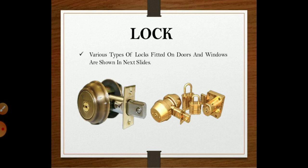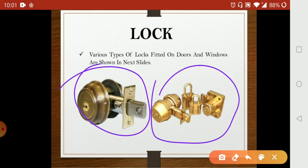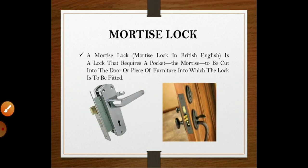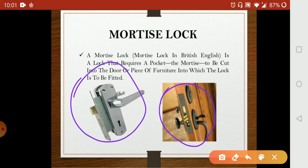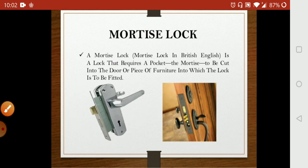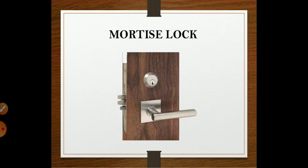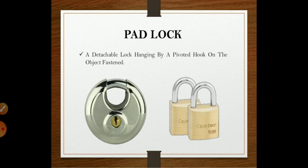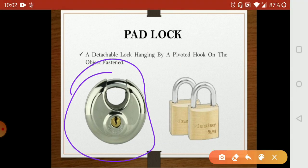Next is locks. There are various types of locks fitted on doors and windows. The first is the mortise lock, which is used in flat systems. A mortise lock — in British English — is a lock that requires a pocket cut into the door or piece of furniture into which the lock is to be fitted. The next is the padlock, which is mostly used in shops.